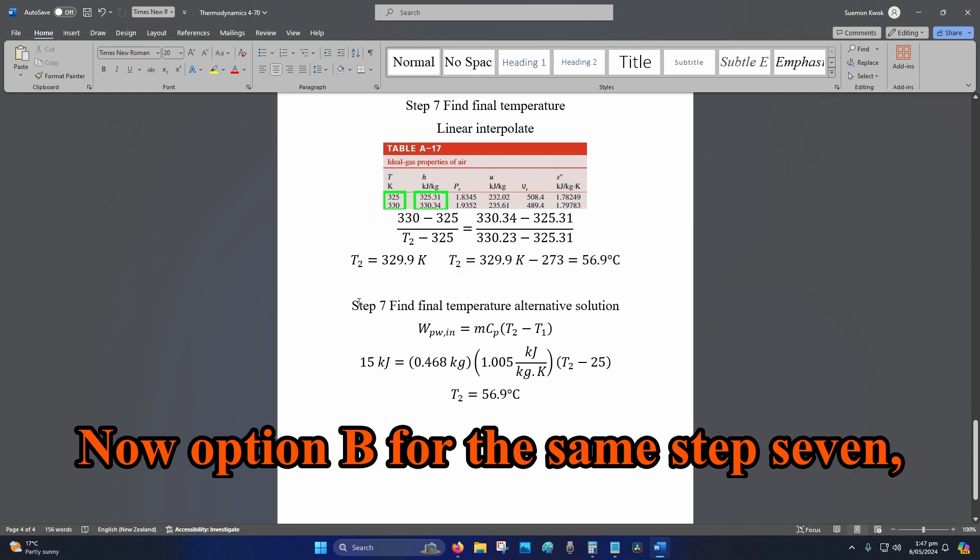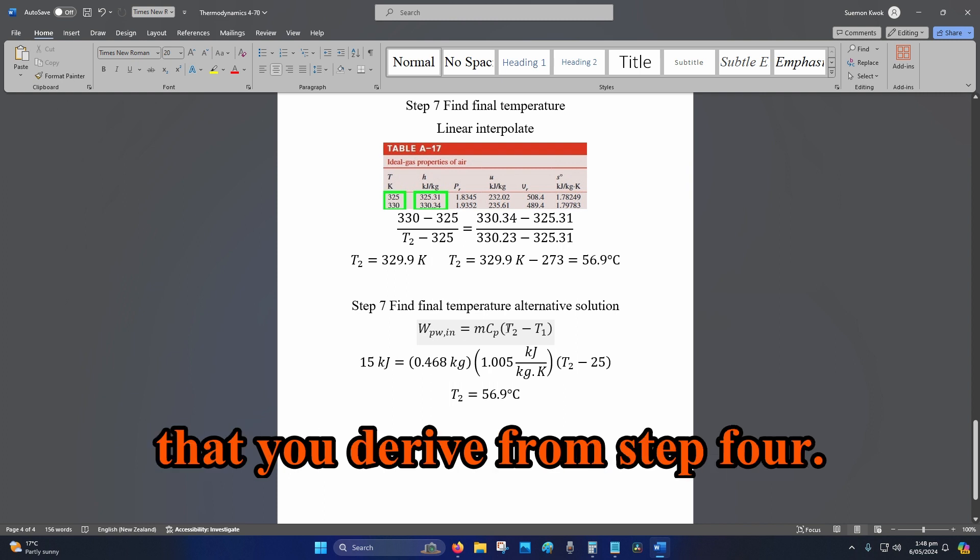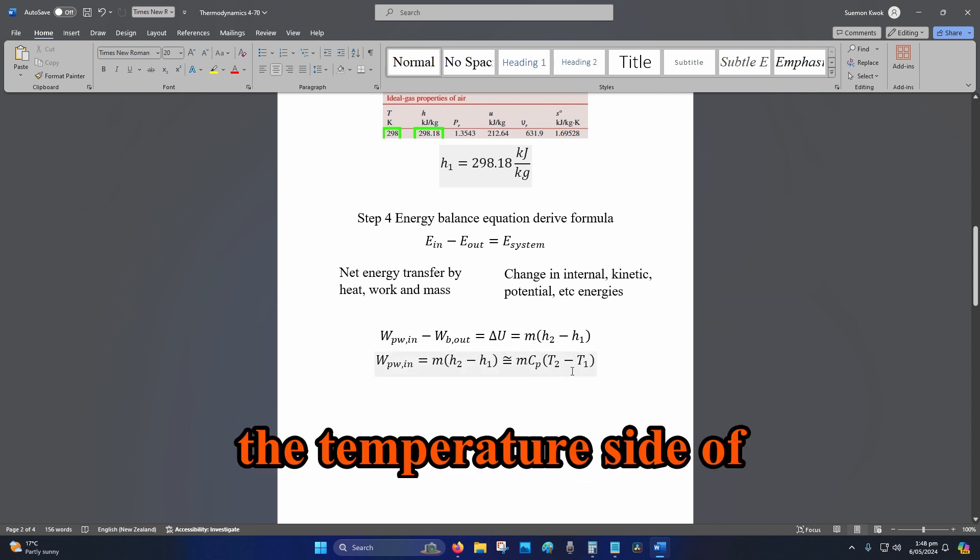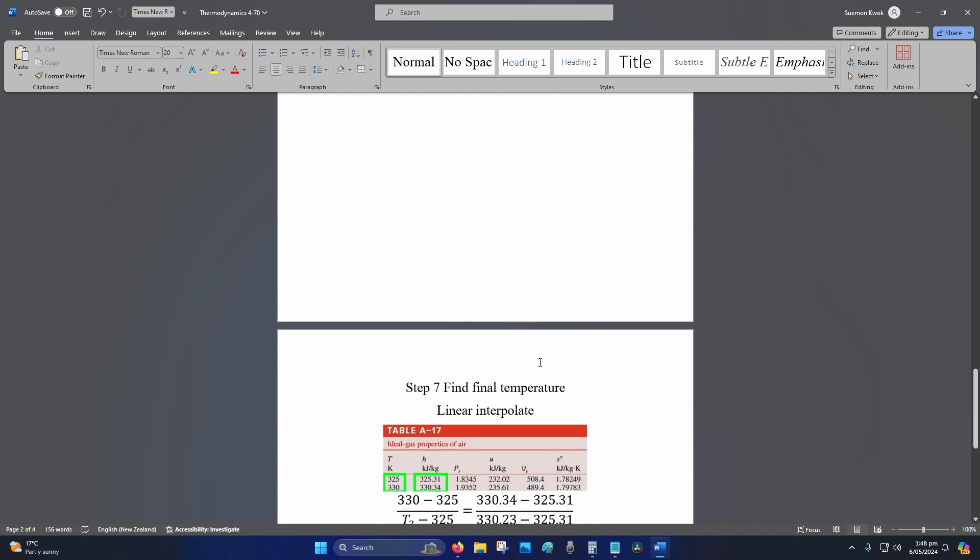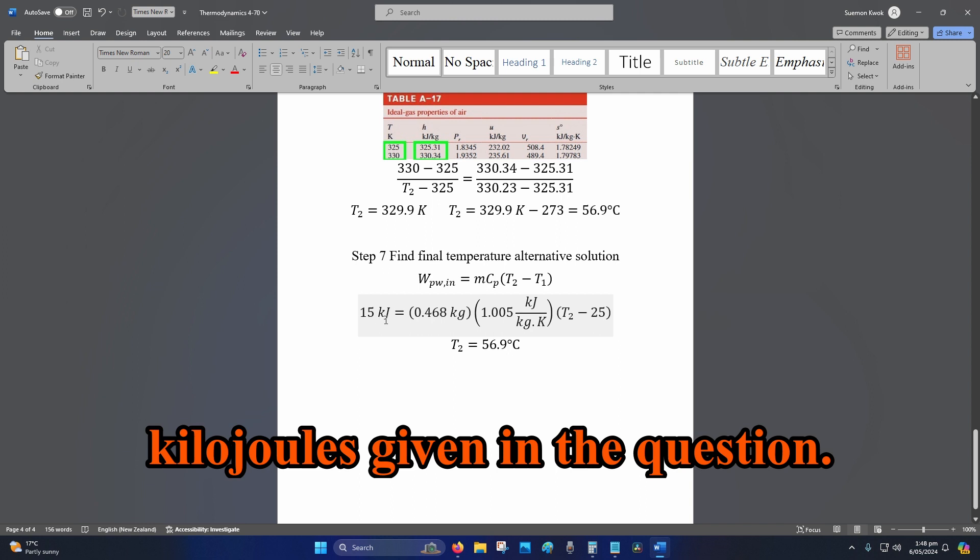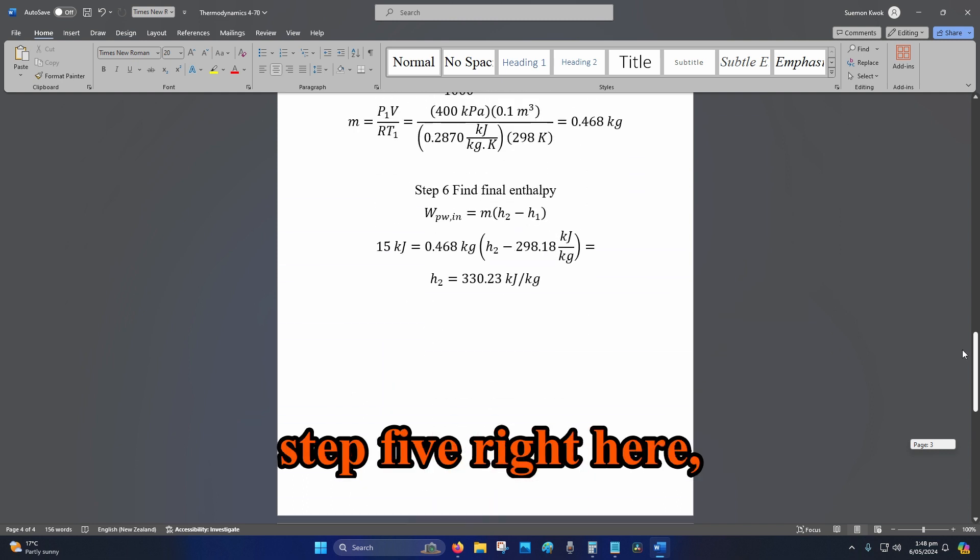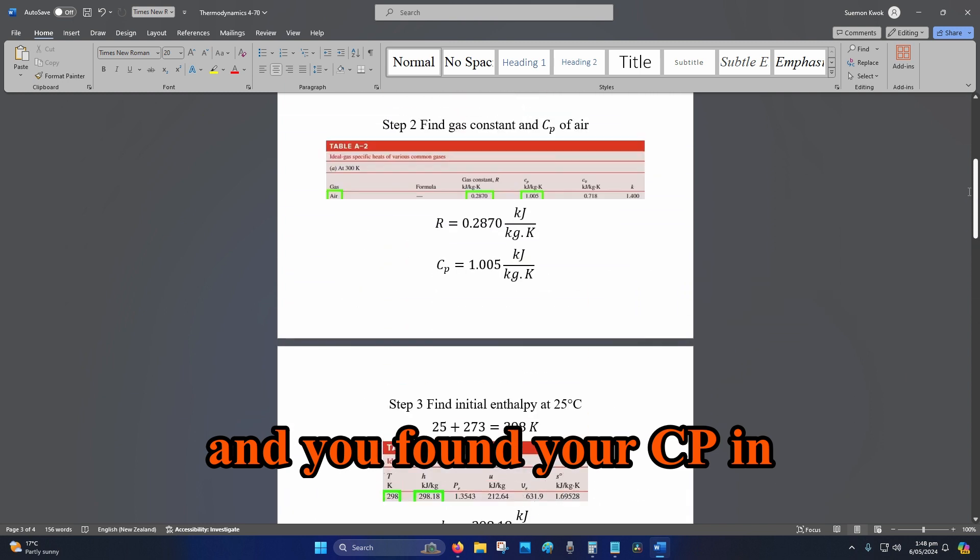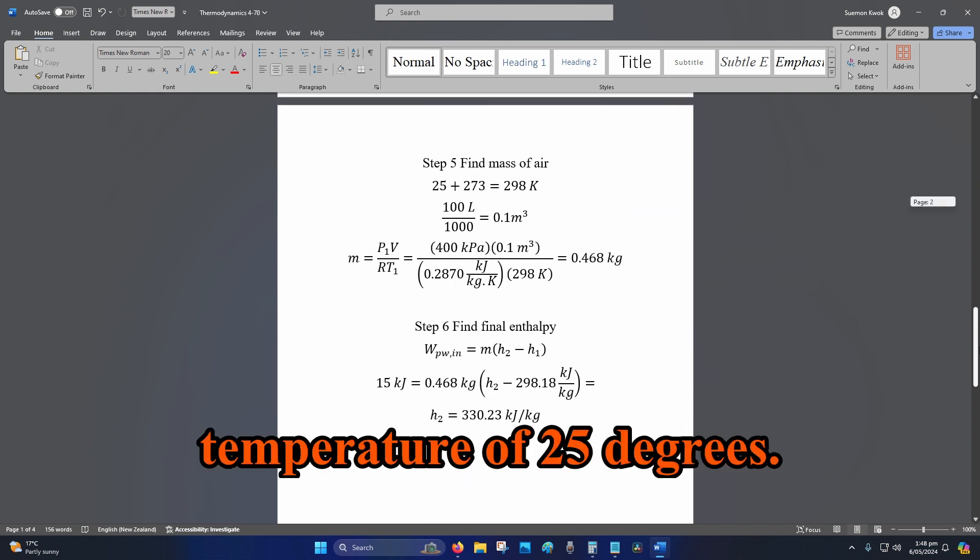Now, option B for the same step seven, you just use your formula that you derive from step four. So now we're using this side, the temperature side of the portion of the formula, so that's mc delta T. This is probably easier for most students. You've got your 15 kilojoules given in your question. You found your mass in step five right here, and you found your cp in step two right over here.